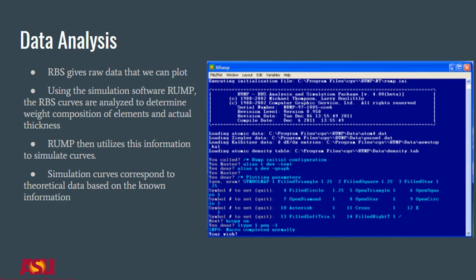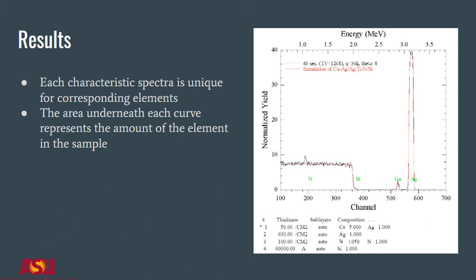RUMP determines the thickness in terms of area density. Remember this so you don't confuse the value of the density for thickness. Further calculations must be done to find the exact thickness value. The red line shows the simulation created by RUMP during layer-by-layer simulation.